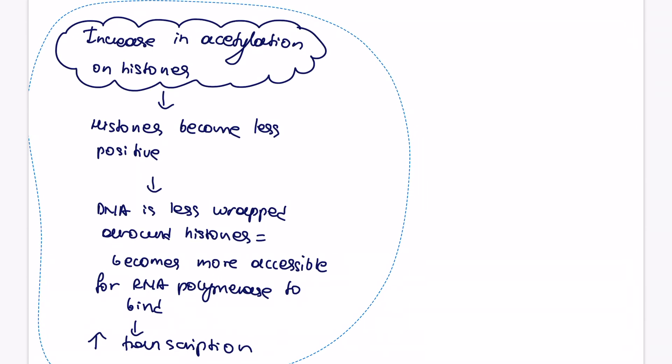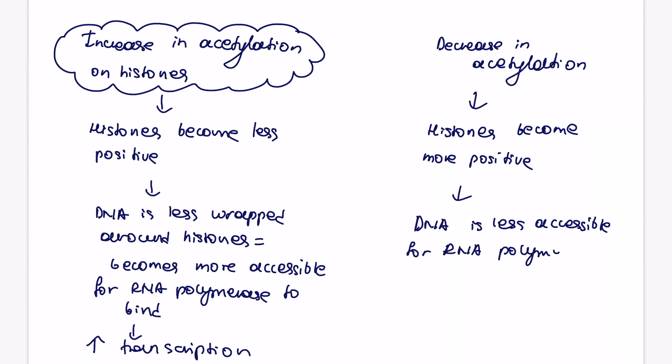And then let's just kind of do the opposite of this. So just a short summary. So decrease in acetylation on histones will make histones more positive, so DNA will be wrapped more around the histones, and it will become less accessible for RNA polymerase to bind, decreasing the rate of transcription.